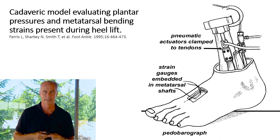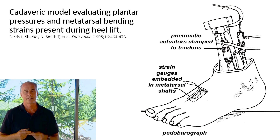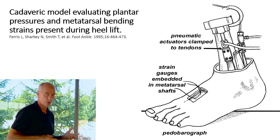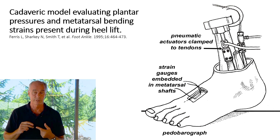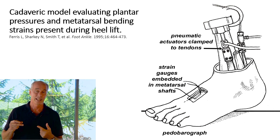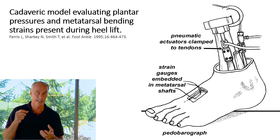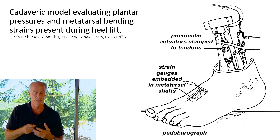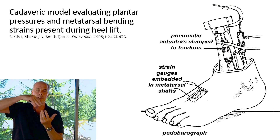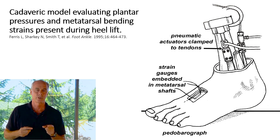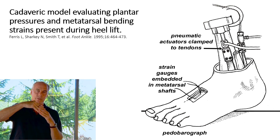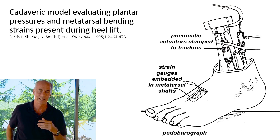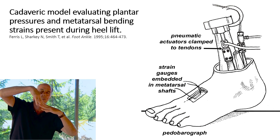A great study published in the Journal of Foot and Ankle Surgery wanted to figure out why so many injuries occur during the propulsive period. They wanted to measure bending forces in the metatarsals and pressure beneath the metatarsal heads. Researchers embedded strain gauges in the metatarsal shafts, measured pressure with a pedobarograph beneath the central metatarsal heads, then attached pneumatic actuator clamps to push down on the foot and duplicate the forces of propulsion.